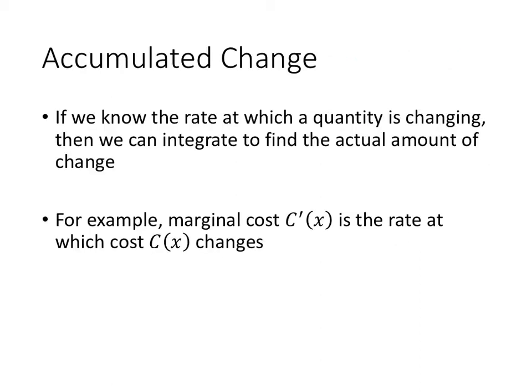Another way to think about what the definite integral tells us is that it's giving us an amount of accumulated change. So if we know the rate at which a quantity is changing, the integral is going to add up all of those changes and give us a total. One way to apply this is if we had a marginal cost function that tells us the rate at which the cost changes. So we can integrate our marginal cost function, and that's going to give us an amount of total or accumulated cost.